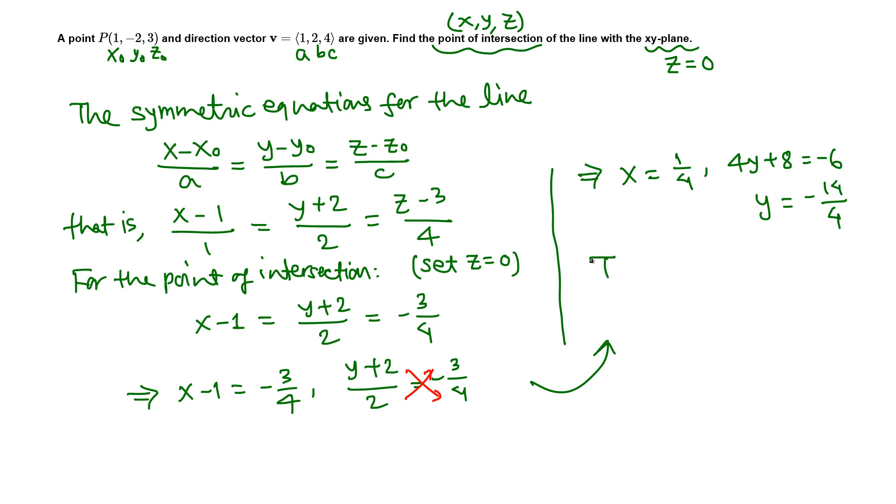Thus the point of intersection is x one-fourth, y is negative 7 halves, and z is 0. Right, xy-plane means z equals 0. Final.